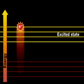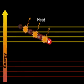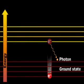An excited molecule loses tiny amounts of heat, bringing it to the lowest energy level in the excited state. One possible next step is fluorescence, in which the molecule drops back to the ground state, emitting a photon with less energy than the one absorbed, because of heat loss in the excited state.